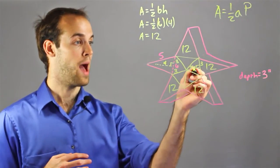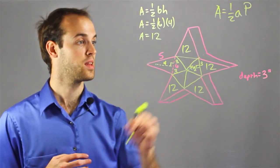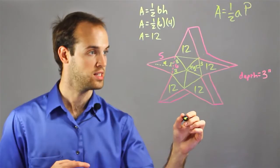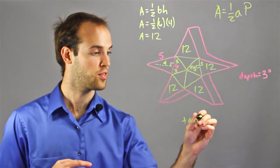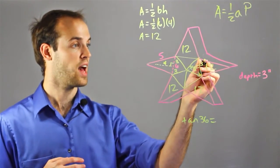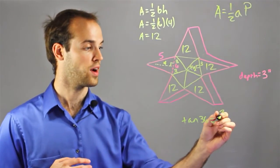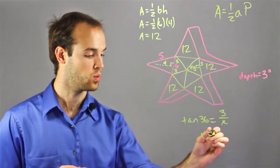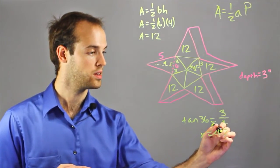So, if I want to know the apothem, which I'm going to label x, I can use a trig function, which is tangent of 36 equals the opposite side over the adjacent side, which is 3 over x. And if I solve that out, I'm going to get x equals 4.127.